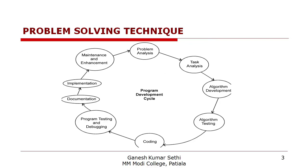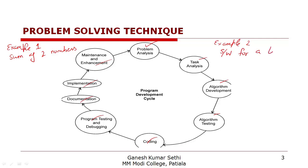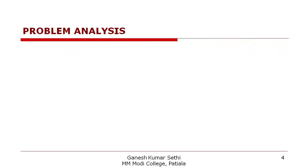The steps of problem solving technique start with problem analysis, then task analysis, development of algorithm, testing of algorithm, then coding, testing, debugging, documentation, implementation, and maintenance and enhancement. We will go through these steps one by one. For examples, I will use: first, a simple example — finding the sum of two numbers — and second, a bigger example — making a software for a library.